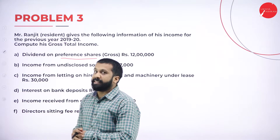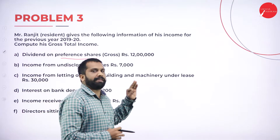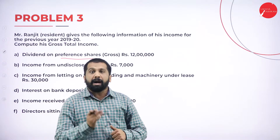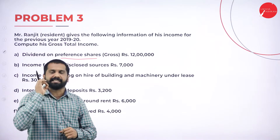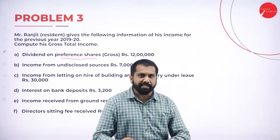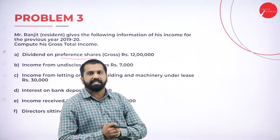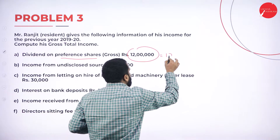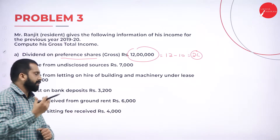Have they mentioned a foreign company? No. If it is an Indian company, dividend is exempted. Dividend from an Indian company is always exempted, but is there a limit? Yes — up to 10 lakh it is exempted. Write this down: up to 10 lakh, any dividend received is exempted. Above 10 lakh, it becomes taxable. In this case, dividend from preferences is 12 lakh, so 12 minus 10 — only 2 lakh is taxable.